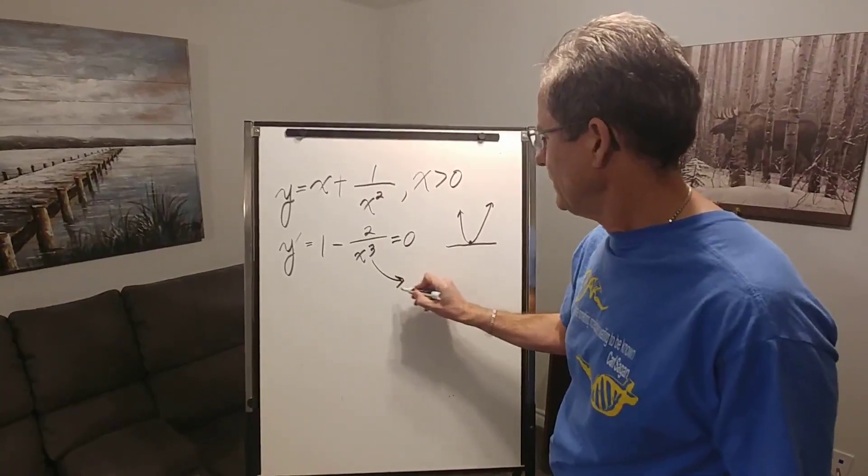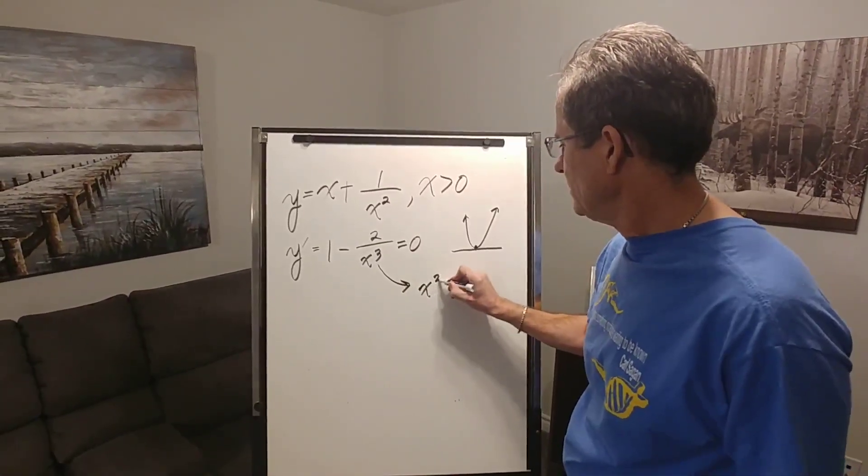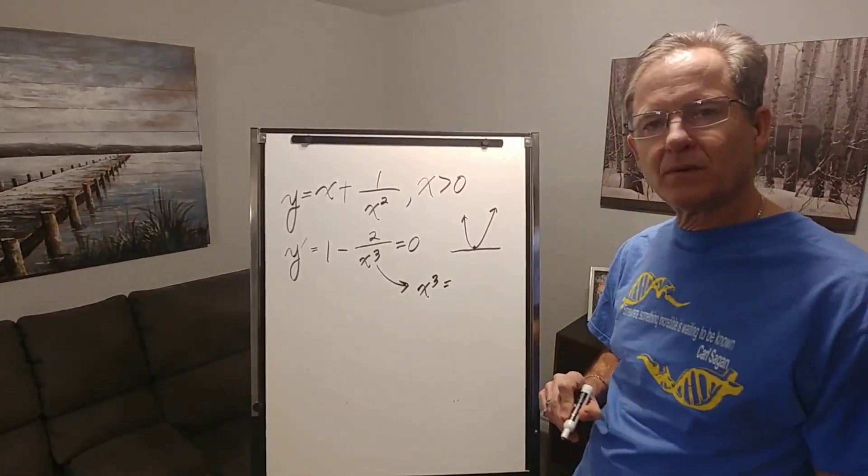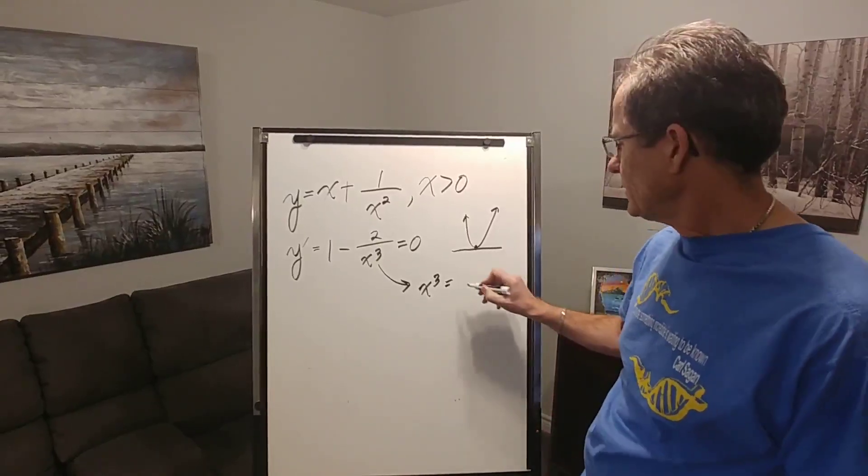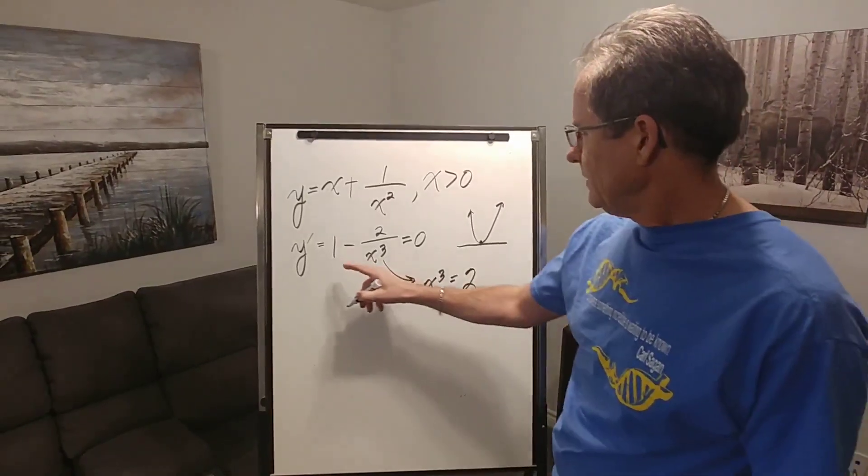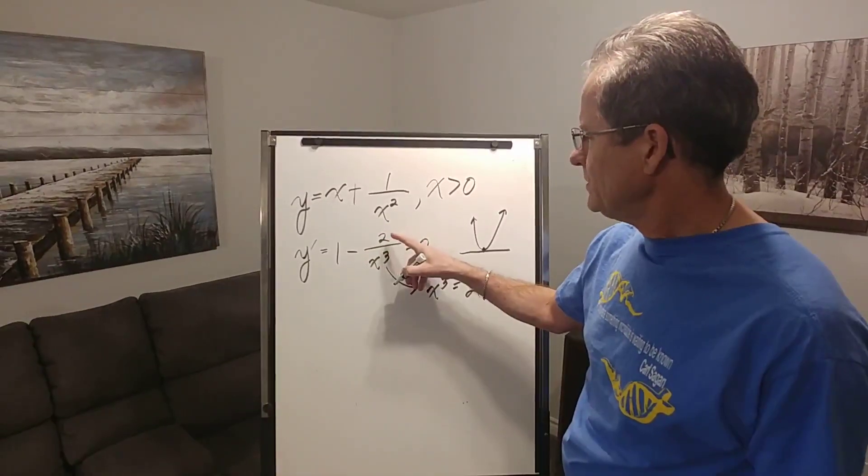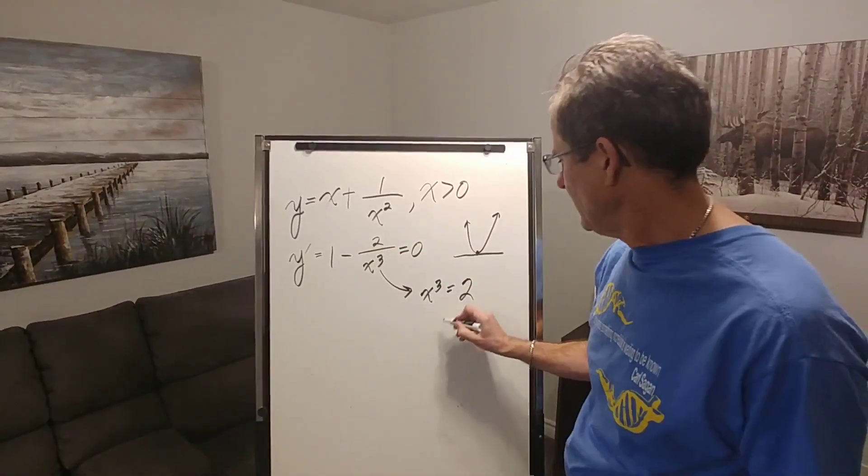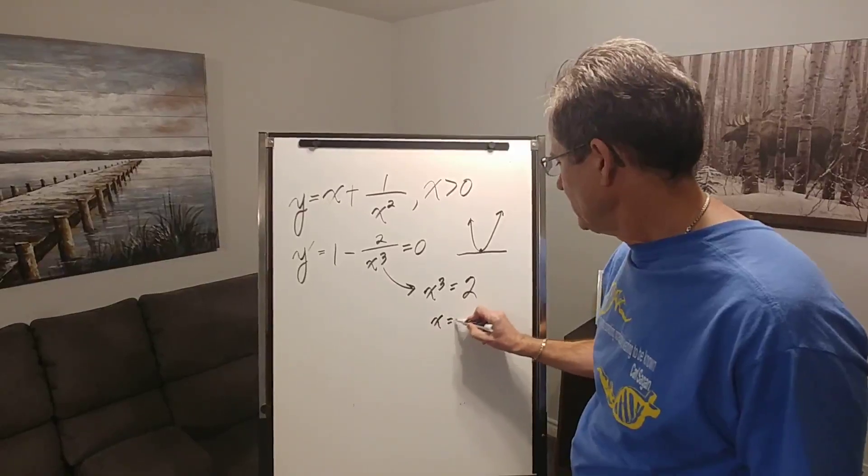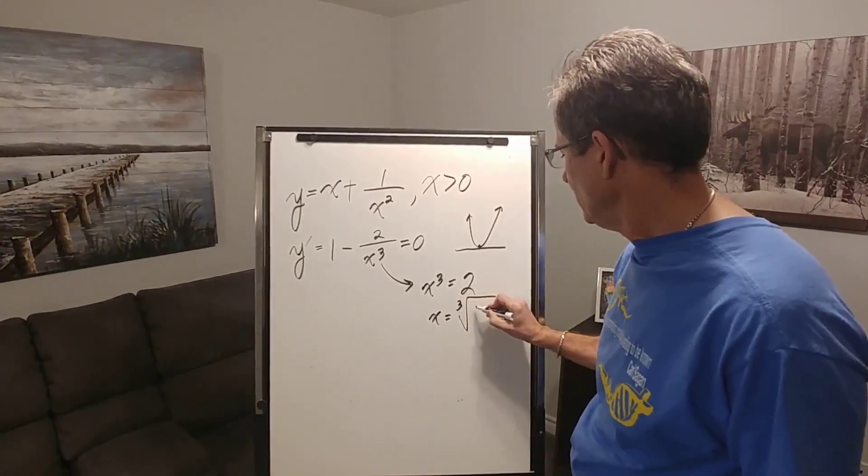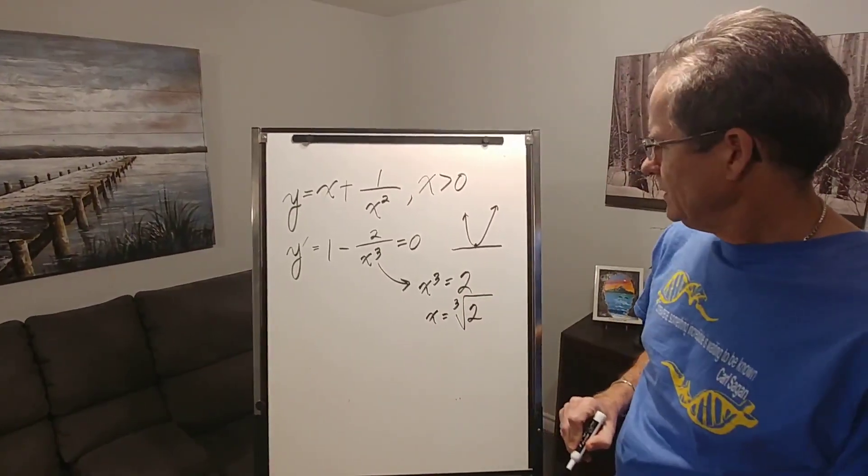You can tell just by looking at this that x cubed must equal what number? That's right, 2, because 1 minus 1 gives you 0. This must be 1 so x cubed must be 2. Therefore x is the cubed root of 2, which we can calculate in a moment.